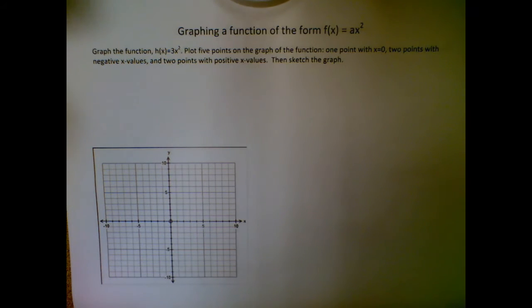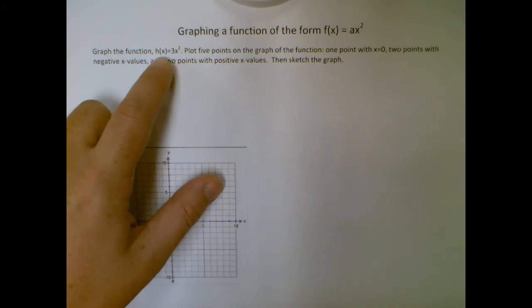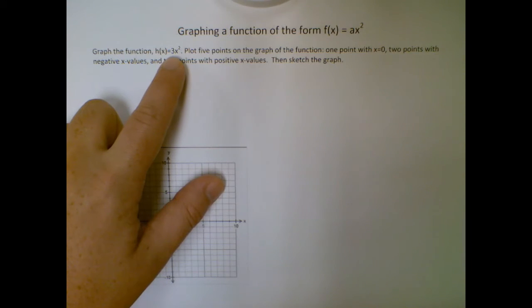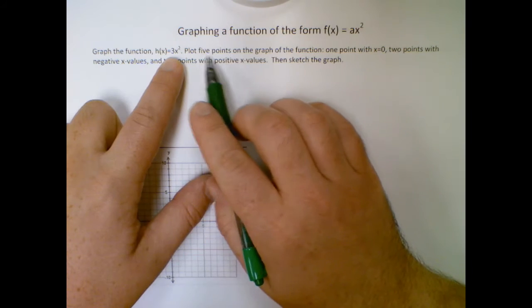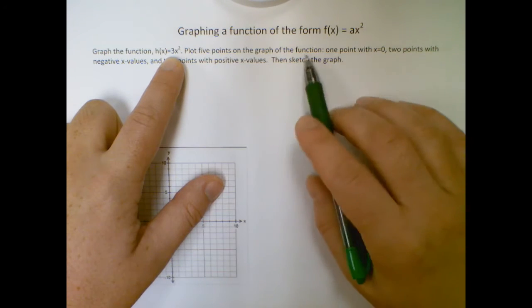So with this one they give us a lot of structure on how they want us to do it, so we want to make sure we're following that accurately. They want us to graph h of x equals 3x squared by plotting five points on the graph of the function.